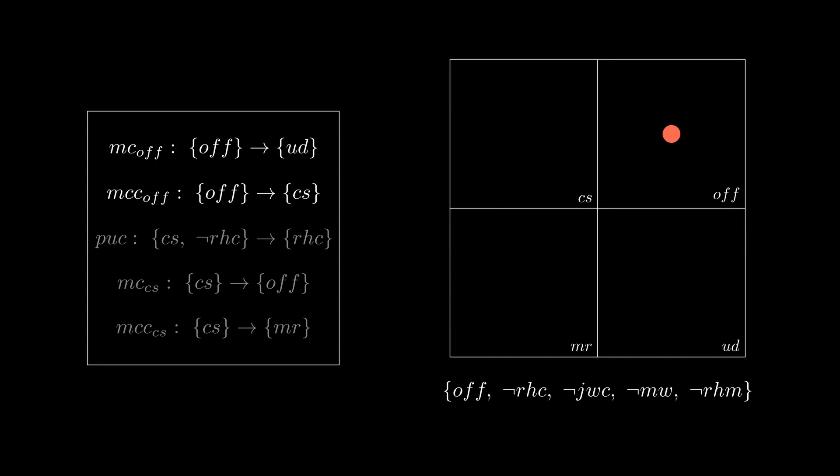Using the previous example, the robot starts off in Joaquin's office. The office move counterclockwise action can be performed because the precondition matches the state, which updates the robot's location to coffee shop, or CS. Then the precondition of pickup coffee matches as well, so the robot now has coffee.